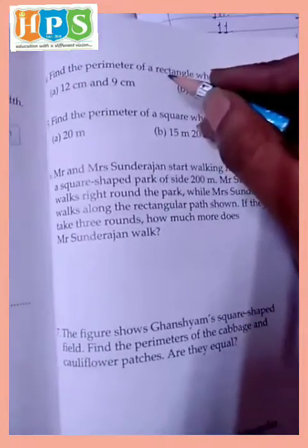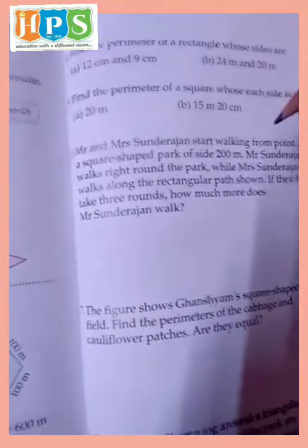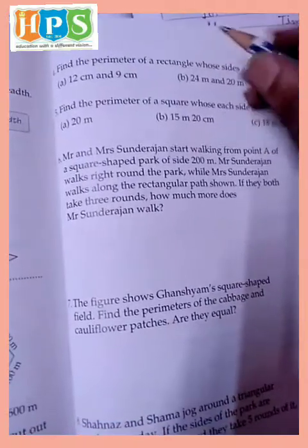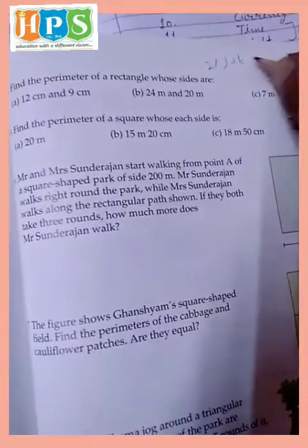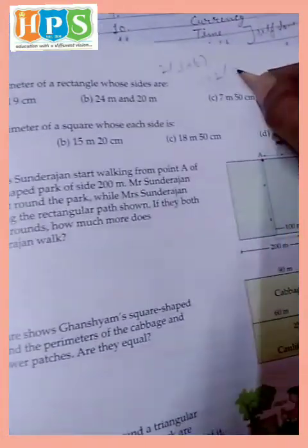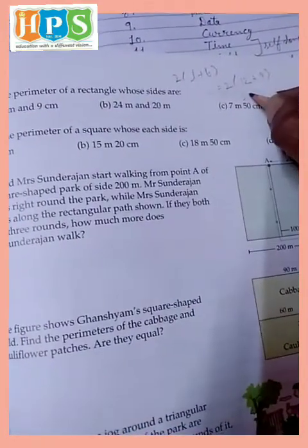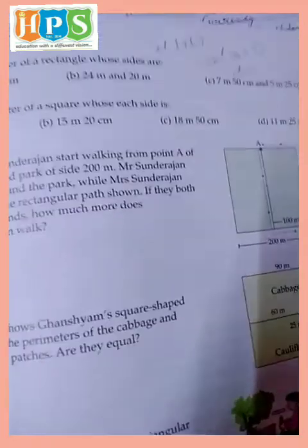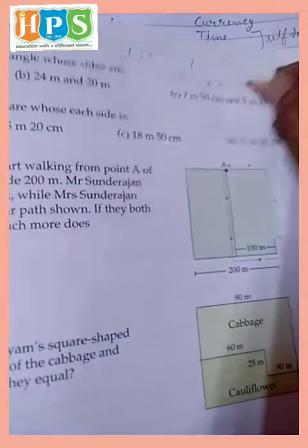Find the perimeter of rectangle whose sides: put off formula, perimeter of rectangle. 2, L plus B. 12, 2 multiply 12 plus 9, 9 and 12, 21, 21 multiplied 2, 42 centimeter.